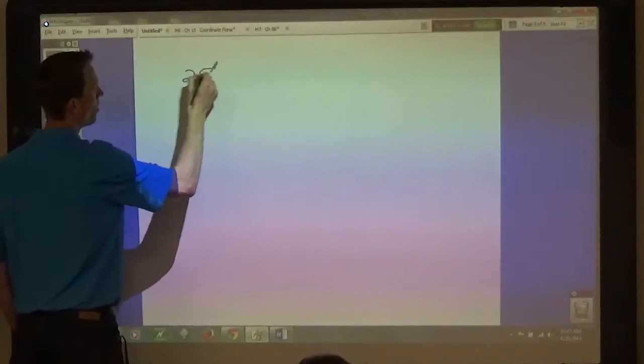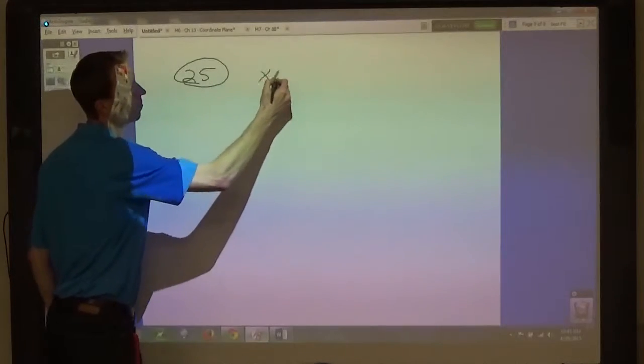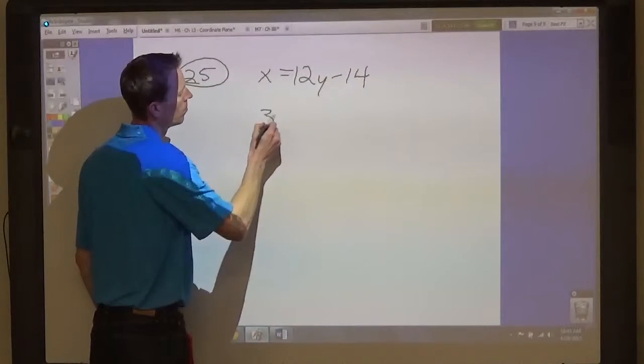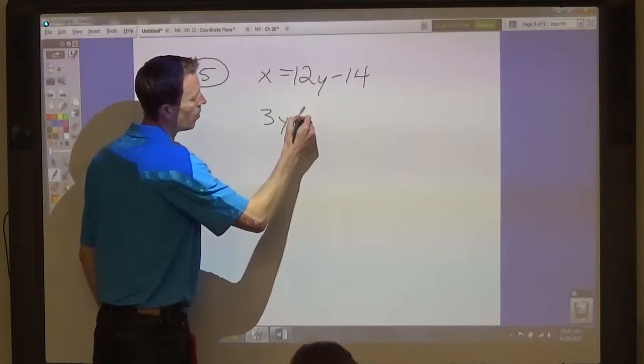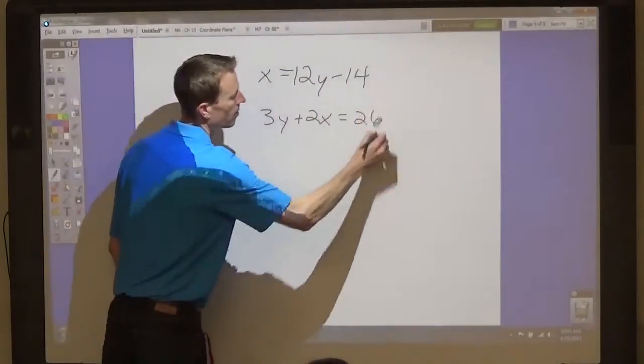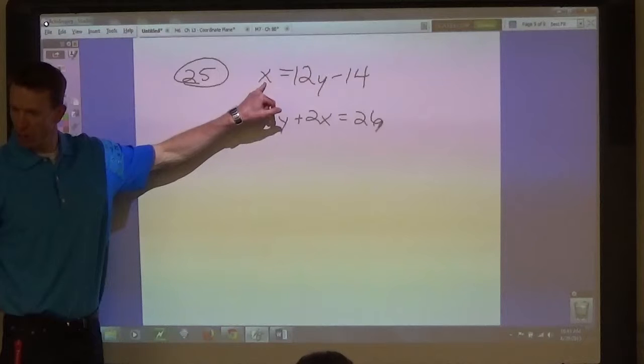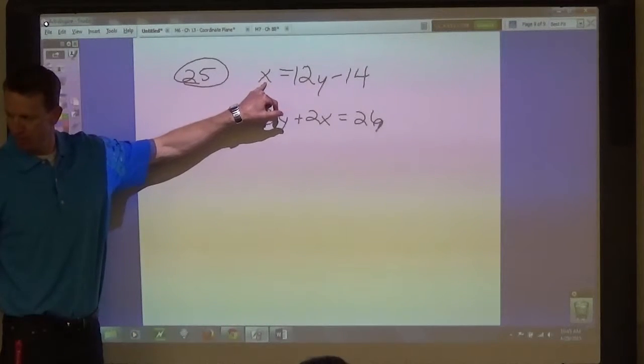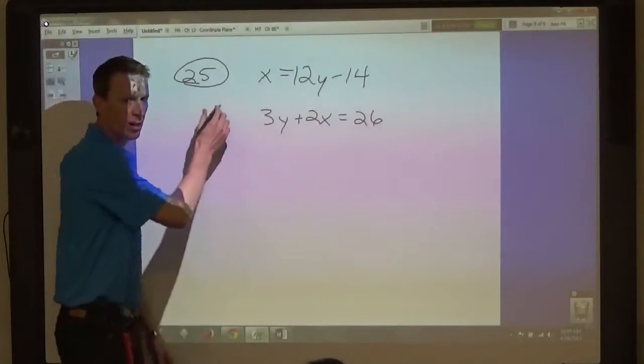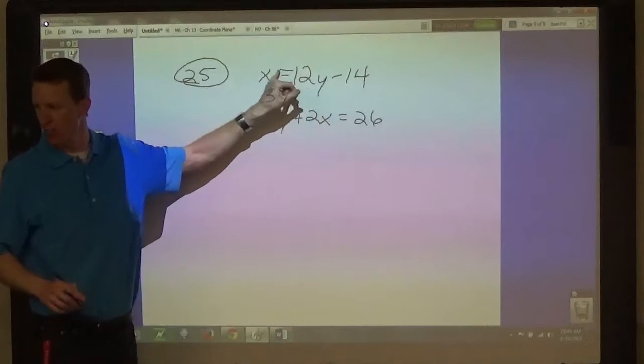What's the system for number 25? X equals 12y minus 14, and 3y plus 2x equals 26. Now, we know what x is equal to. We have an expression for that. So instead of writing the x, let's write the expression for x. This one works well for substitution because one of the equations is solved for the variable.